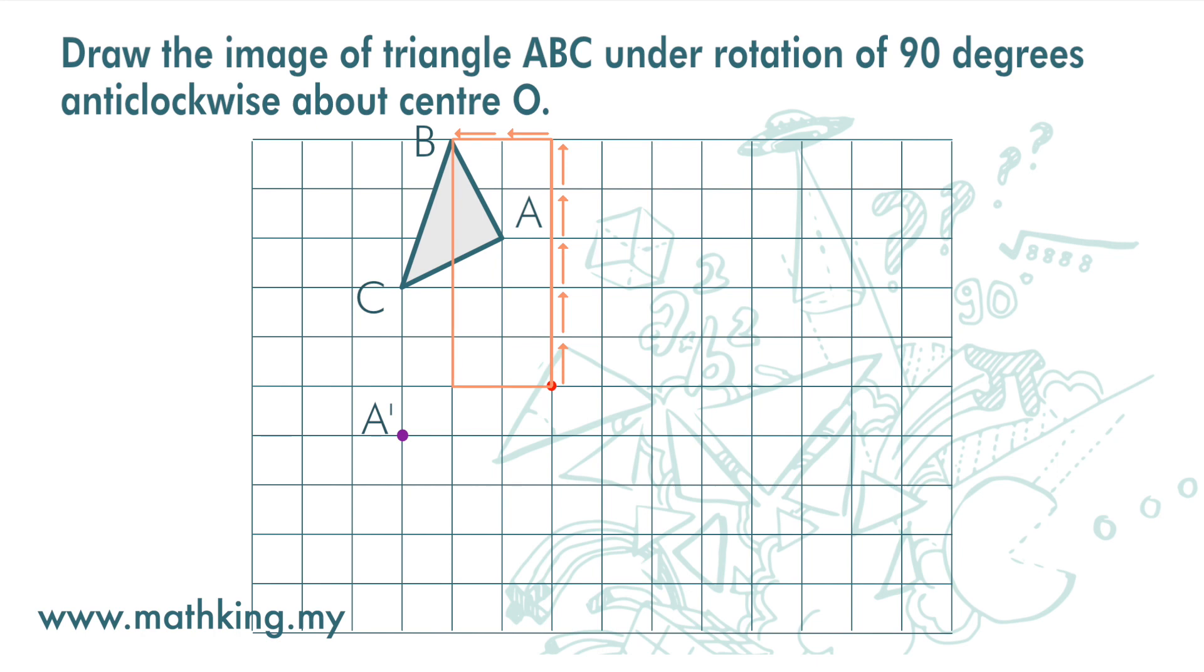Then we want to rotate the rectangle. It is easy to rotate this vertical line by 90 degrees. And then 1, 2, 3, 4, 5. And 1, 2.